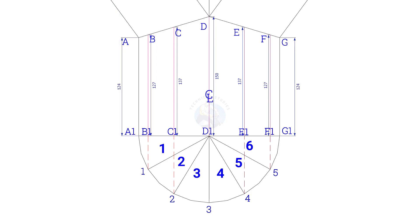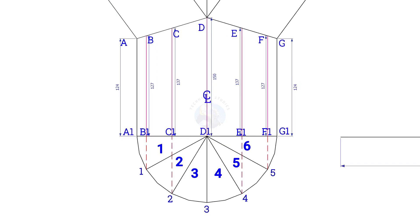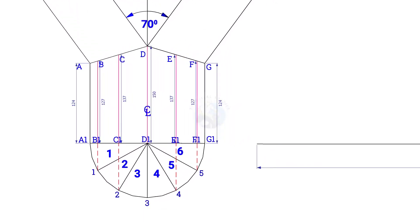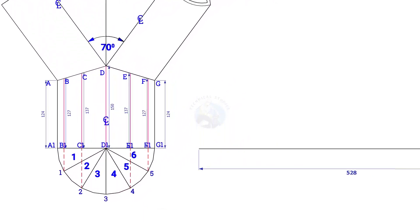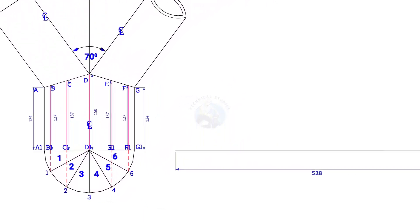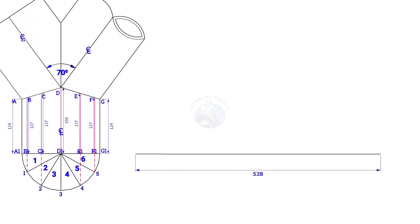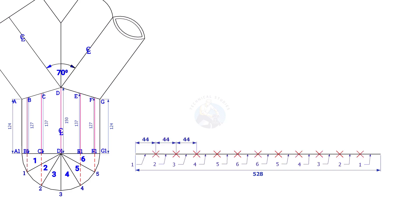The circumference is nearly 528 millimeters. Draw a 528 millimeters long line. Since we divided the half circle into 6 parts, divide the line into 12 equal parts. 528 divided by 12 is 44, so the length of each segment is 44 millimeters.